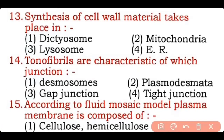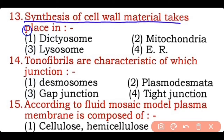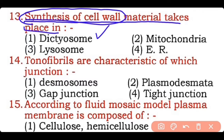Question 13: The synthesis of cell wall material takes place in — dictyosome, mitochondria, lysosome, or endoplasmic reticulum? Correct answer is option one — the synthesis of cell wall material takes place in the dictyosome, or Golgi apparatus.